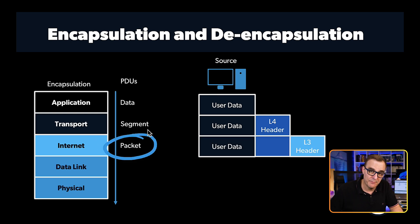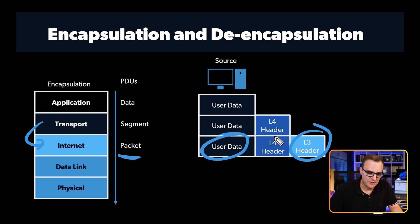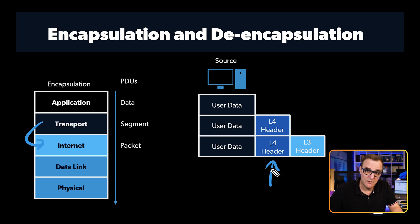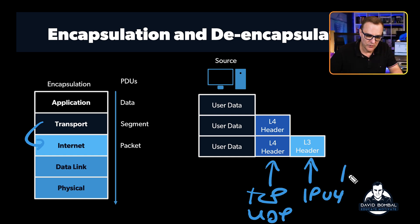At layer three, we have packets. Layer four sends the segment to the network layer, which adds a new layer three header — this is known as a packet. Notice we have the original data encapsulated with a layer four header, which is then encapsulated with a layer three header. At layer four, we may have a TCP or UDP header, and at layer three we might have an IPv4 or IPv6 header, depending on which protocols you're using.